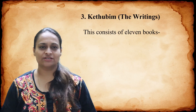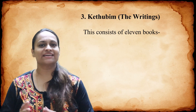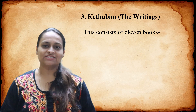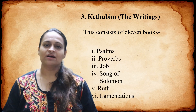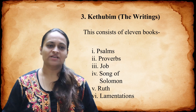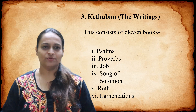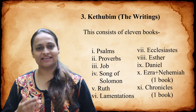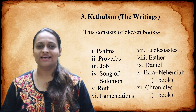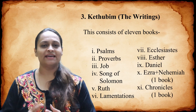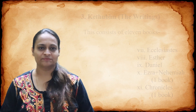The third section is Ketuvim, or the sacred writings. This consists of 11 books: Psalms, Proverbs, Job, Song of Solomon, Ruth, Lamentations, Ecclesiastes, Esther, Daniel, Ezra and Nehemiah as one book, and Chronicles as one book.